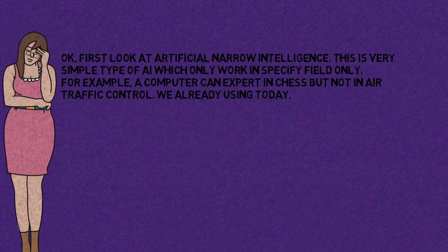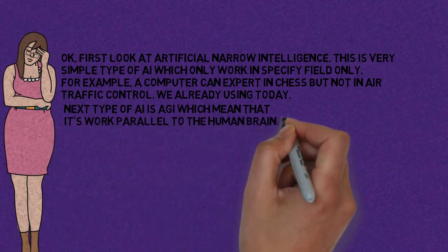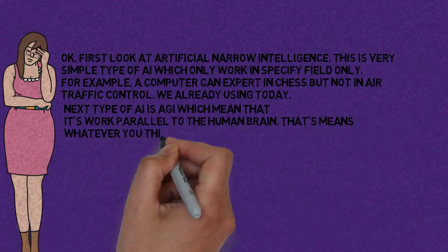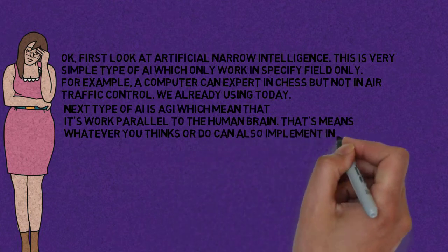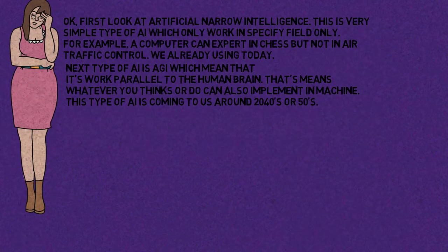Next type of AI is AGI, which means that it works parallel to the human brain. That means whatever you think or do can also be implemented in machines. This type of AI is coming to us around the 2040s or 50s.